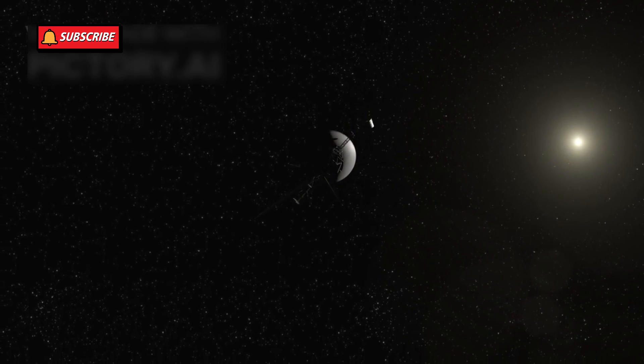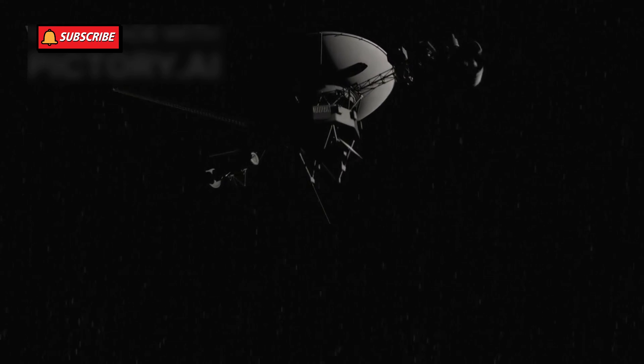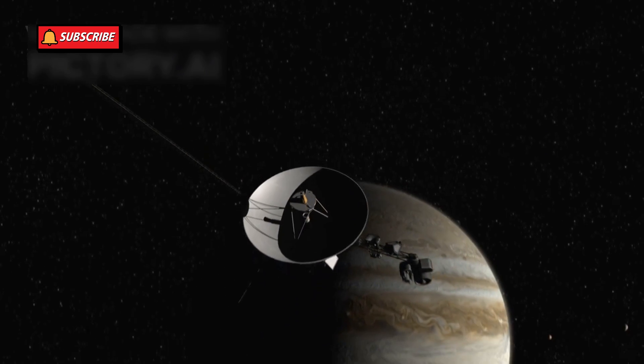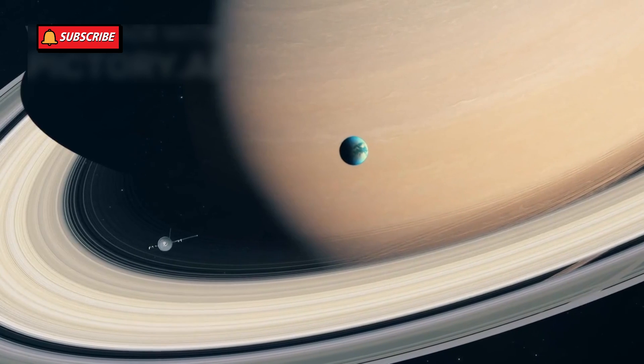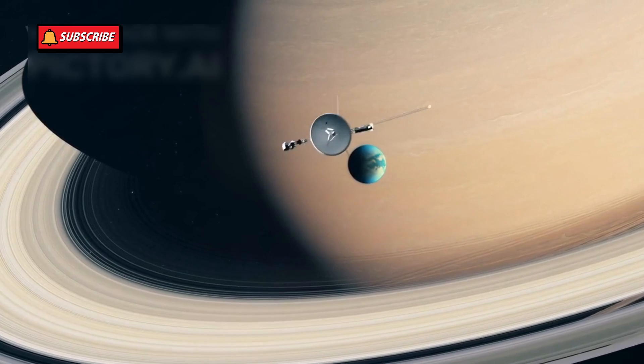Launched on September 5, 1977, Voyager 1 was part of NASA's ambitious mission to explore the outer planets of our solar system. Initially, its primary task was to study Jupiter and Saturn, along with their moons.